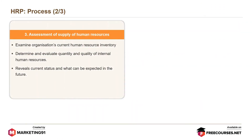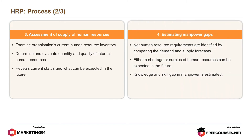The next step is assessment of supply of human resources, which involves examining the organization's current human resource inventory. It determines and evaluates the quantity and quality of internal human resources, and reveals the current status and what can be expected in the future. The fourth step is estimating manpower gaps, where net human resource requirements are identified by comparing demand and supply forecasts. Either a shortage or surplus of human resources can be expected, and knowledge and skill gaps in manpower are estimated.